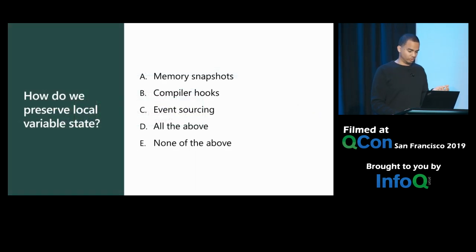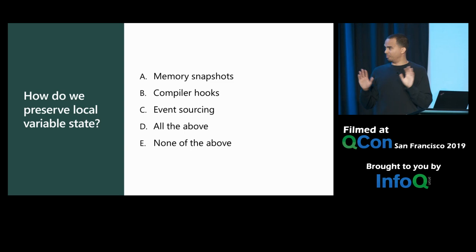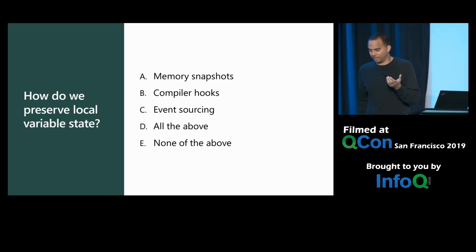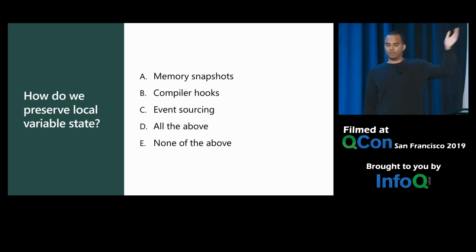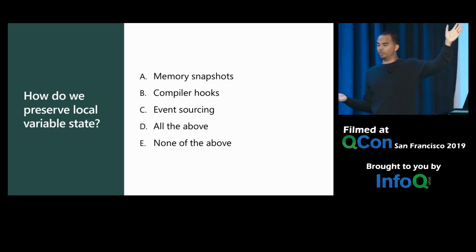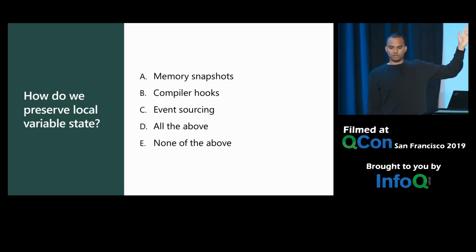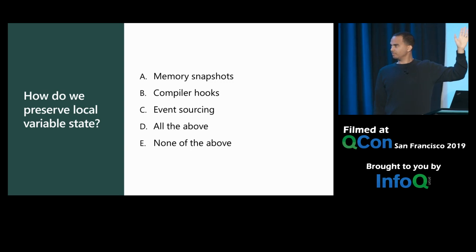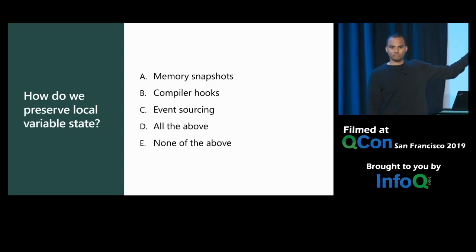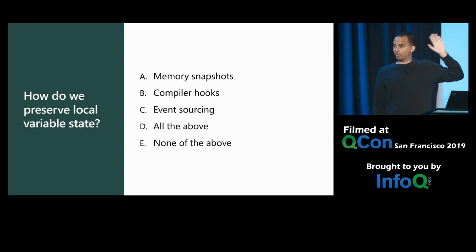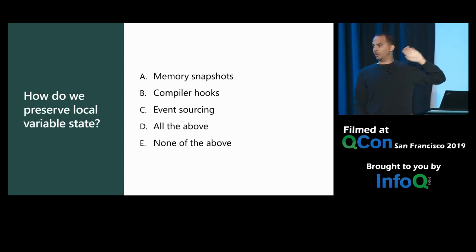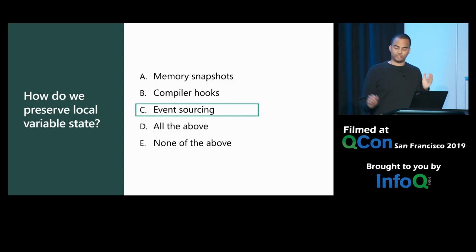Maybe it looks a little magical — let me ask how you think we do this. Memory snapshots, because we're preserving local variables? Compiler hooks, given our use of async/await? Event sourcing? A little bit of all the above? The answer is C — event sourcing. We're not doing any special memory snapshotting or compiler hooks. We're just using event sourcing to create statefulness in these orchestrator functions, which also gives us a degree of reliability.